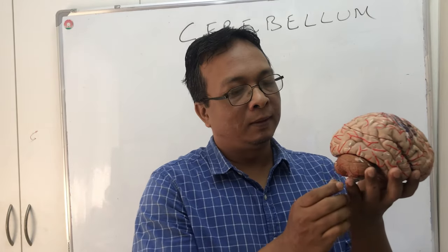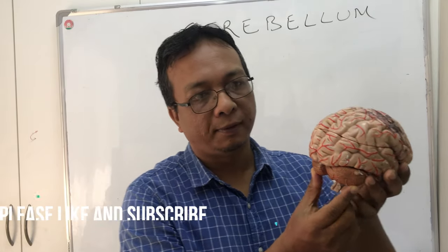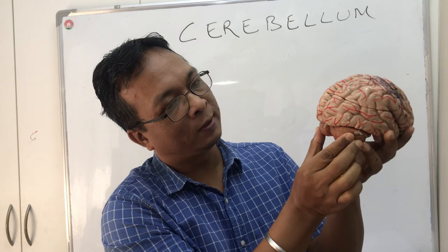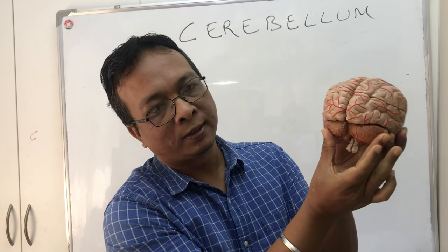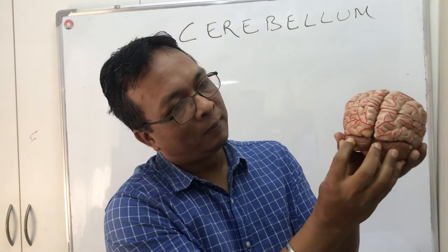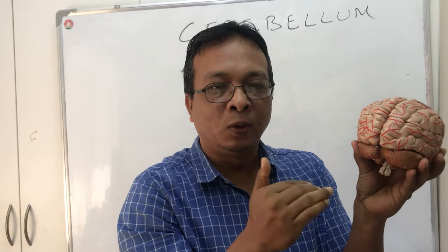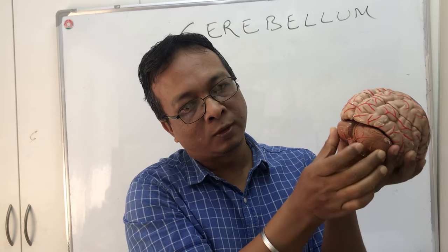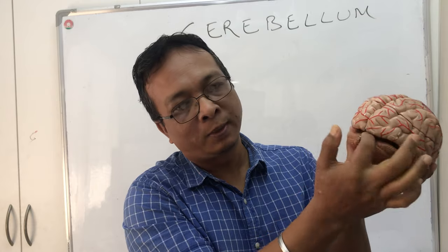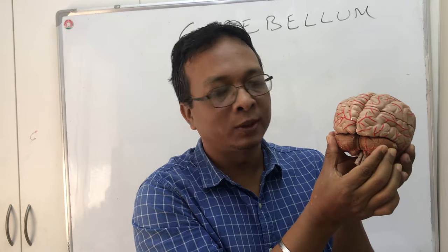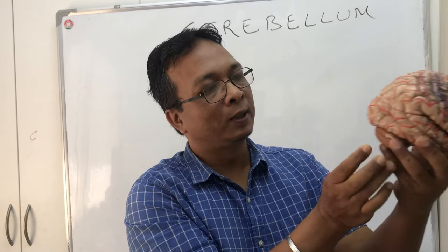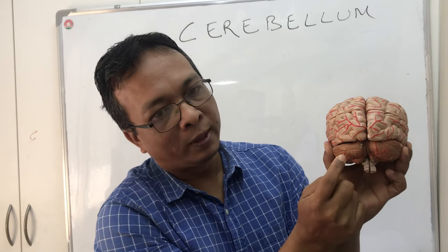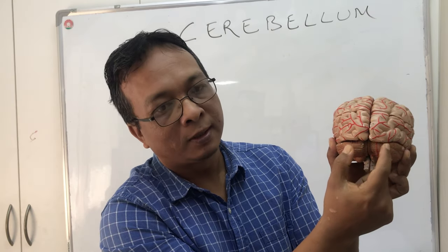Looking at the cerebellum here - the cerebral cortex is above, and below the cerebral cortex is the cerebellum. Cerebellum means 'little brain' - it means below the cerebral cortex. These are the two small pieces of the cerebellum, below the cerebral cortex. We have left and right cerebellum hemispheres, just as we have left and right cerebral cortex.